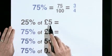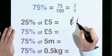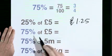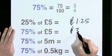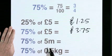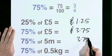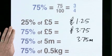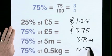25% of 5 pounds is 1 pound 25, so 75% of 5 pounds must be 3 pounds 75. 75% of 5 metres is 3.75 metres. 75% of 0.5 kilograms is 0.375 kilograms.